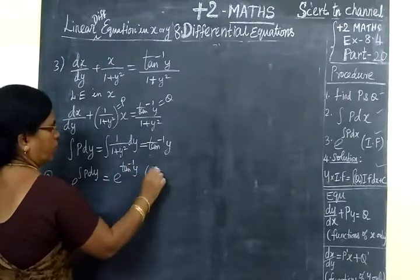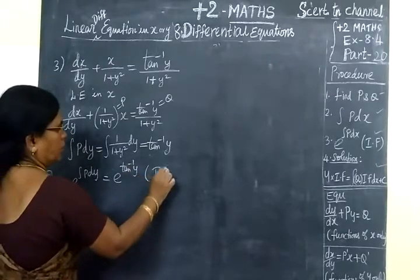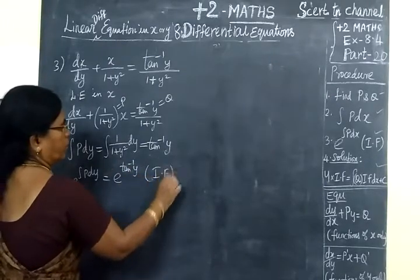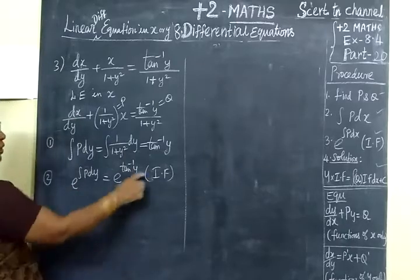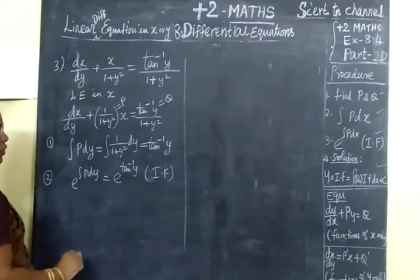Next step: finding e to the power of the integral. So this gives e to the power of tan⁻¹y. This is the integrating factor.